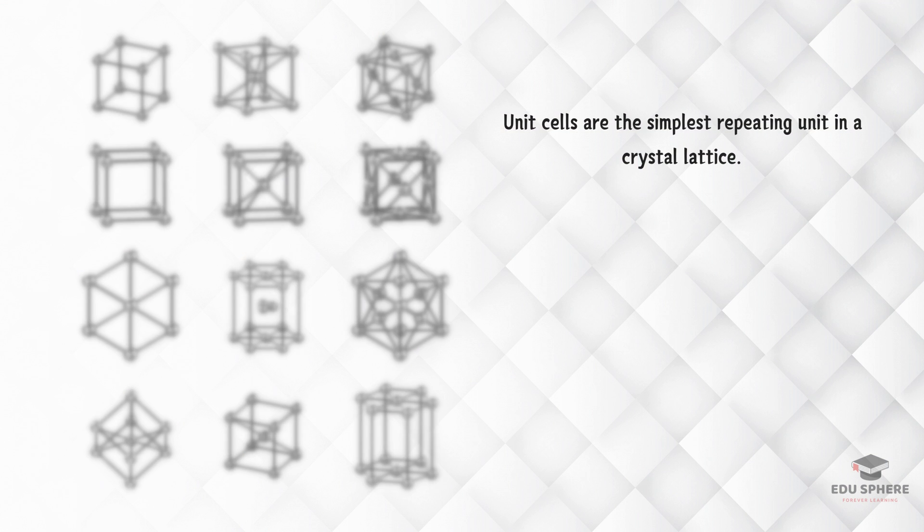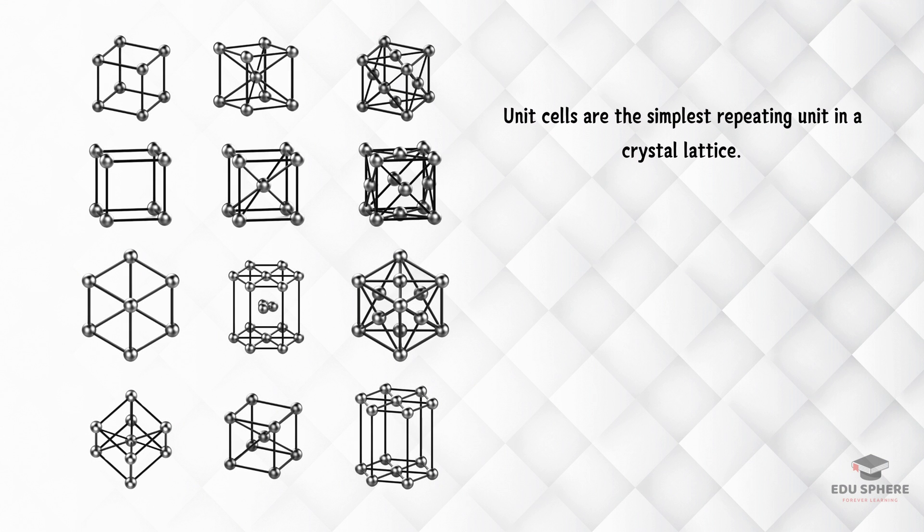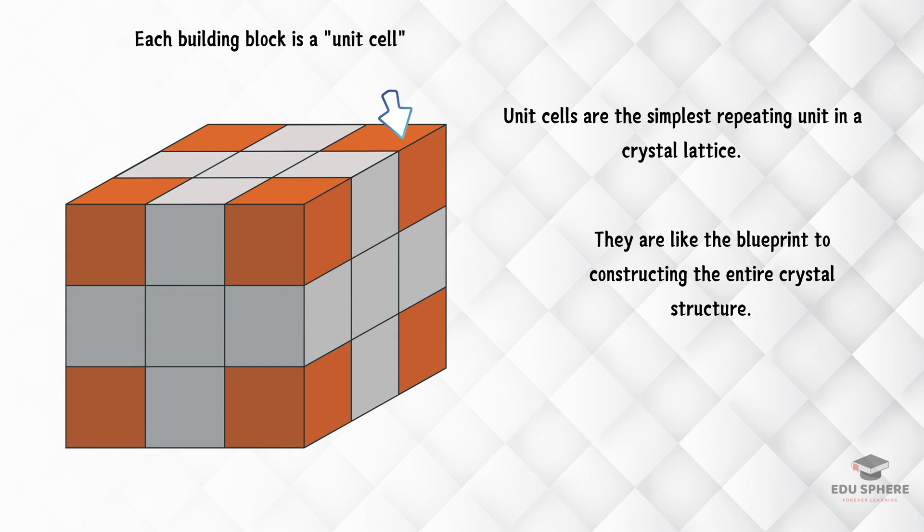Unit cells are the simplest repeating units in a crystal lattice, much like the building blocks of a structure. Think of it as a blueprint that determines the entire crystal's properties. Each building block, or unit cell, when stacked in three dimensions, creates the entire crystal structure.